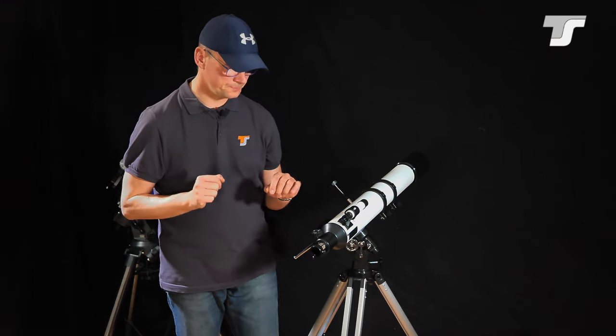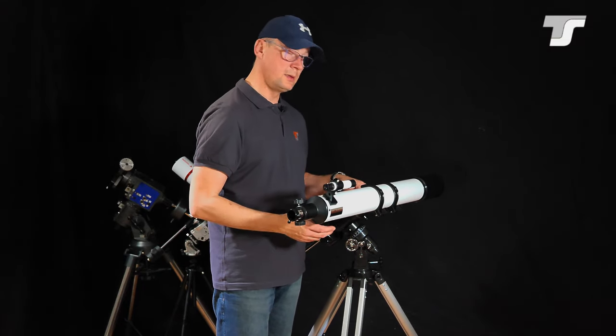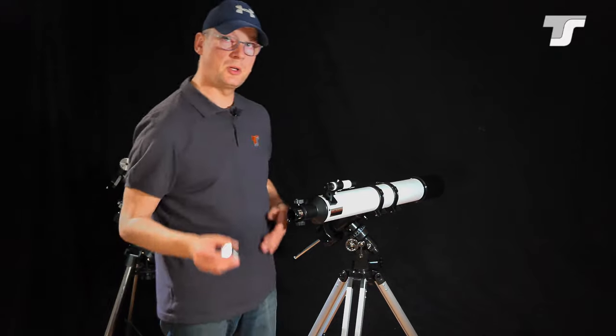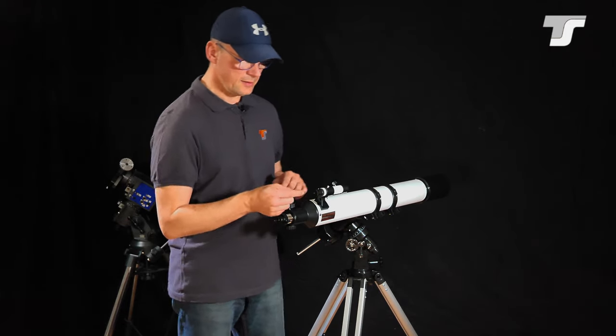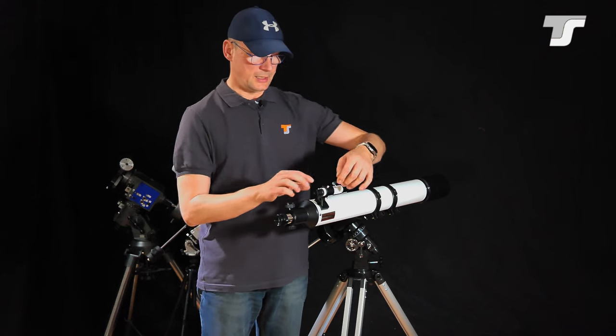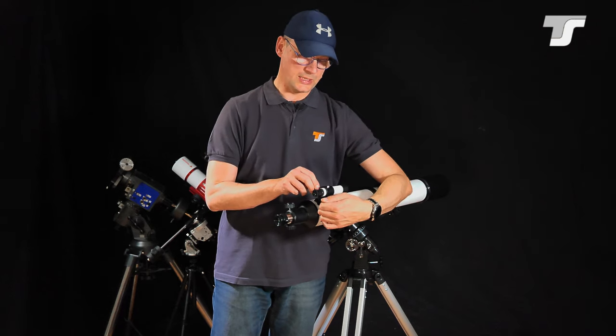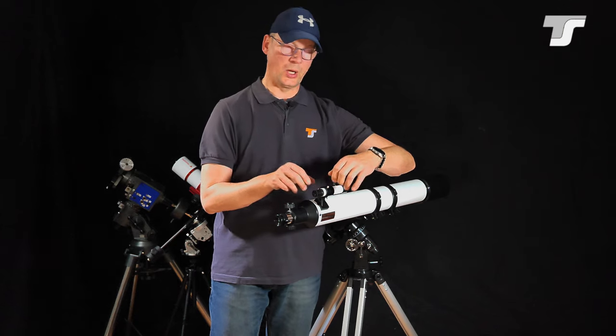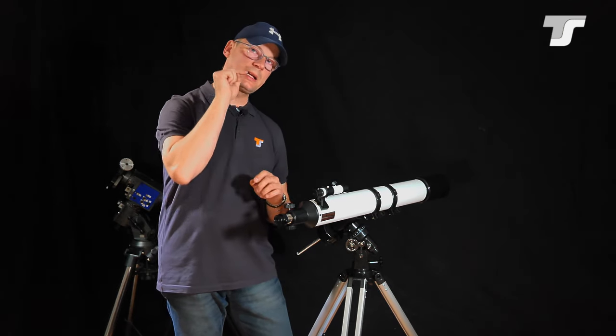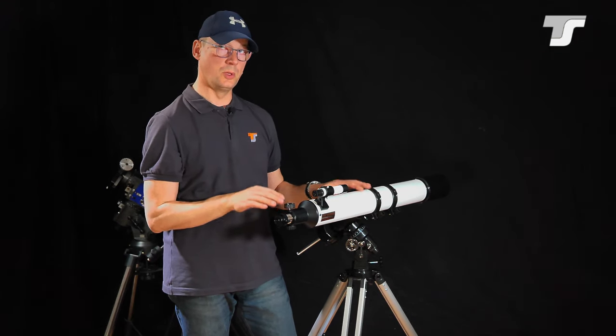And what you should do is now point to a terrestrial object, maybe a very distinctive tree on the horizon or a building. Use the highest magnification with the 4 millimeter eyepiece, and then have a look through this finder scope and adjust the position of the finder scope by using these three screws here, moving them in or out, to bring the crosshair in this finder scope exactly onto that same object you're observing through this big telescope.